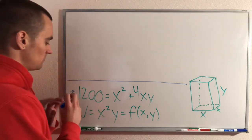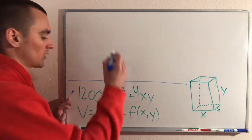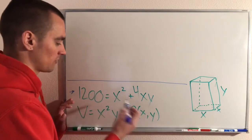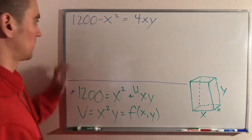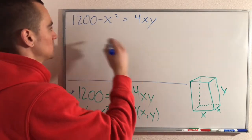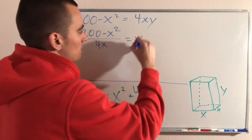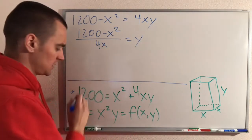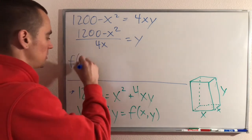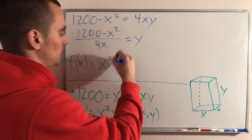All we need to do is take this restriction equation and solve it for one of our variables. In this case, the variable that we only have one of is y, so that's probably going to be easier to solve for. We'll take that and plug it into the volume equation. So let's take the restriction equation and get y all by itself. First we subtract x squared over to the other side, giving us 1200 minus x squared equals 4xy. Then we divide both sides by 4x, giving us y equals (1200 minus x squared) all over 4x.